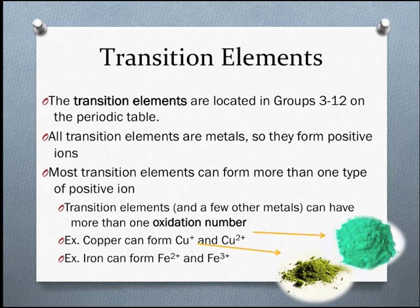As metals, they can achieve stability by giving up electrons to form positively charged ions. Unlike the other groups of the periodic table, some transition metals can form more than one type of positive ion.